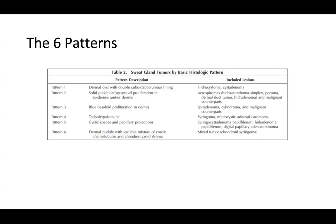What are the six patterns of sweat gland tumors by basic histologic pattern? Patterns include: a dermal cyst with double cuboidal columnar lining, seen in a hydrocystoma or cystadenoma; solid pink clear squamoid proliferation in the acrospiroma family; blue basaloid proliferation in the dermis in entities such as spiradenoma, cylindroma, and malignant counterparts; tadpole/paisley tie pattern encompassing syringoma and microcystic adnexal carcinoma. Not included on this table is desmoplastic trichoepithelioma as well as morpheaform basal cell carcinoma — those are the malignant entities in addition to microcystic adnexal carcinoma you need to think about in that differential.